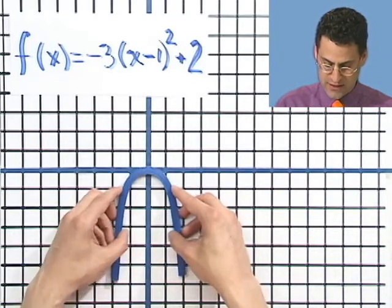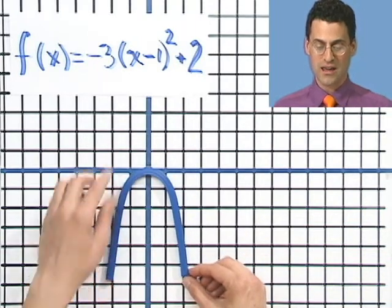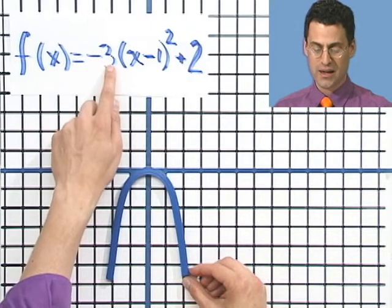So that 3 factor is a squeeze factor, right? It makes it tighter because the number is 3. Okay, so that takes care of the minus 3x squared.